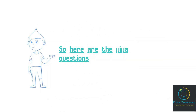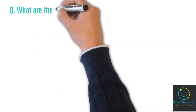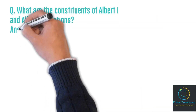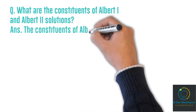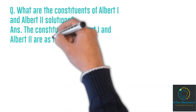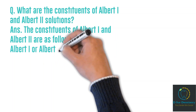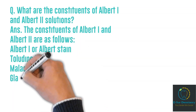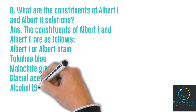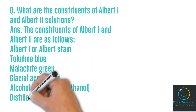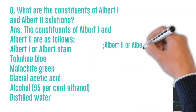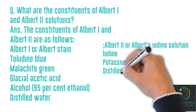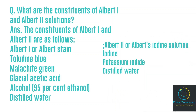Question 1: What are the constituents of Albert 1 and Albert 2 solutions? Answer. Albert 1 contains toluidine blue, malachite green, glacial acetic acid, 95% ethanol, and distilled water. Albert 2 solution is basically an iodine solution — it contains iodine, potassium iodide, and distilled water.